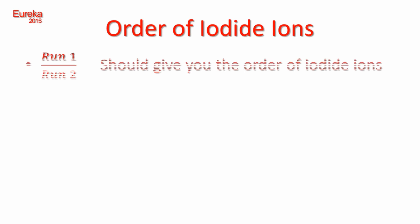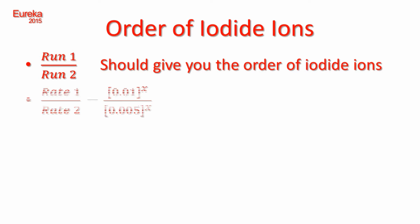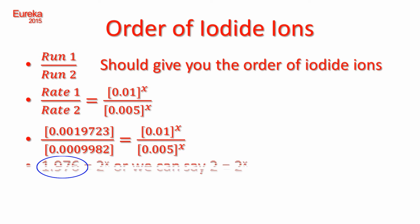Now let's determine the order of the iodide ions. For that, we will pick trials 1 and 2. The ratio of rates of trial 1 and 2 is equal to 1.976, we can round this to the next whole number, which is 2.